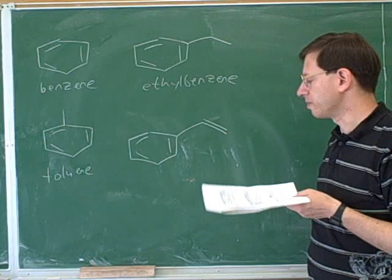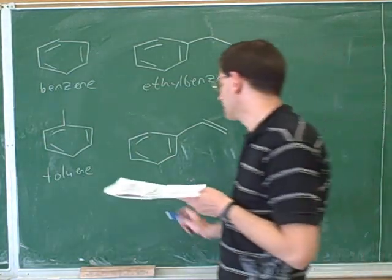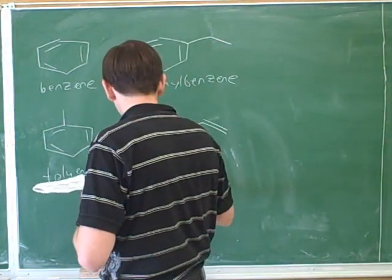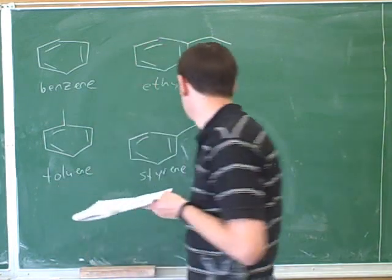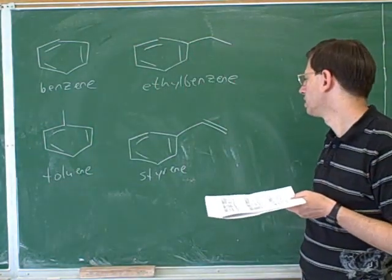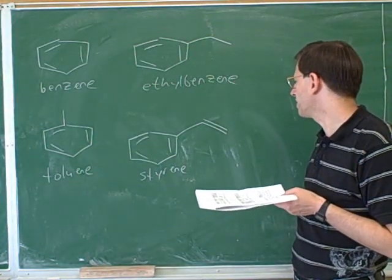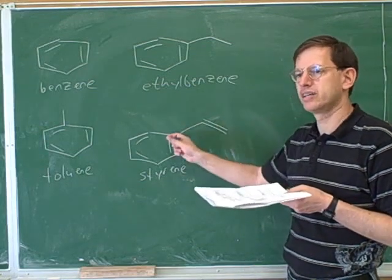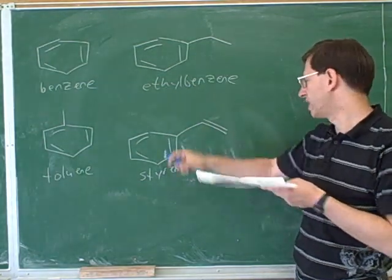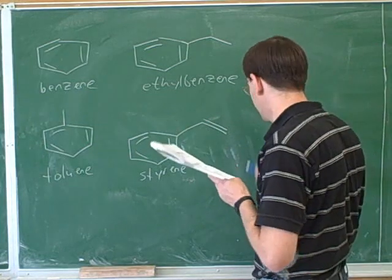Here's another compound where we almost always use a common name. This is called styrene. Notice that what we have here is an ethylene double bond on the benzene. So the double bond on the benzene, the common name for that is styrene.